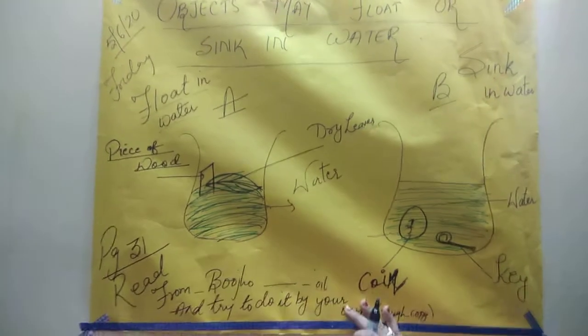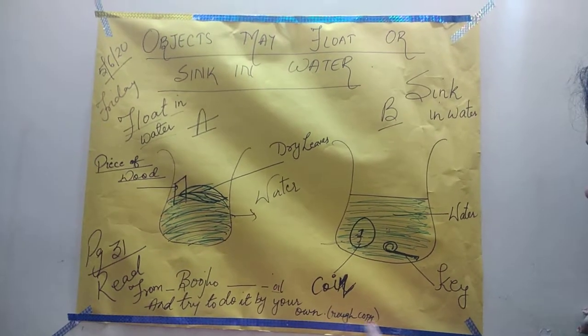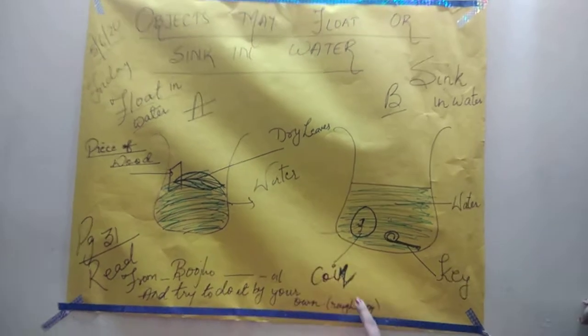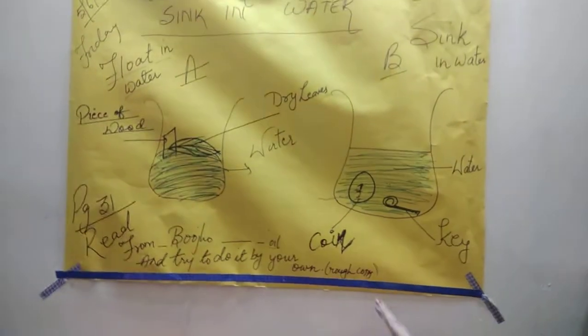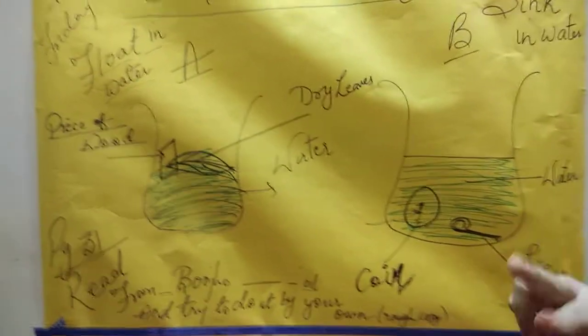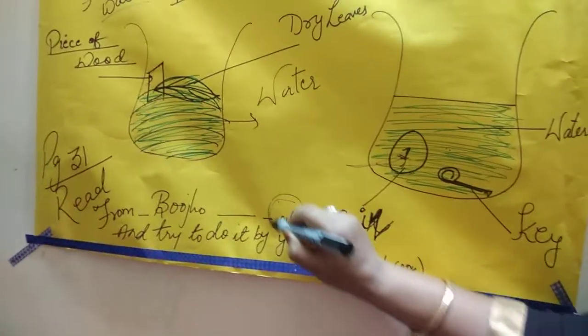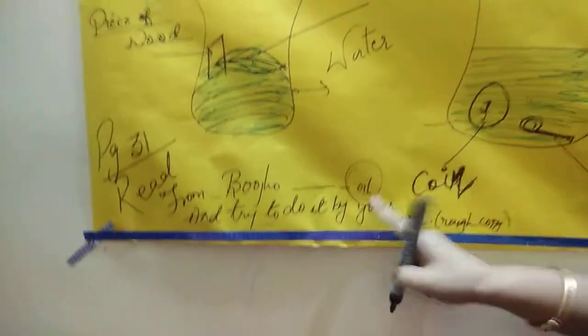Vohi puchha hai is paragraph mein. So that is your homework which you will do in rough copy. And they have also asked you which are the things which float in oil. Paani nahi, dousra liquid liya hai. In oil. So they asked you things, give an example for water and things you give example for oil which float and sink.